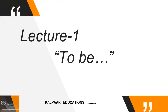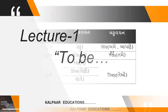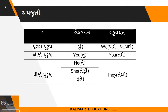તો ચાલો શરૂ કરીએ લેક્ચર 1 ટુ બી. ટુ બી એટ લઈએ તે સમજતા પહેલા આપણે થોડીક સમજૂતી મેળવી લઈએ. આપણે ગુજરાતીમાં હું, તમે, આપણે, તે - જેવા શબ્દ વાપરીએ છીએ.